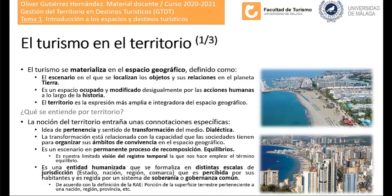El territorio es una entidad humanizada que se formaliza en distintas escalas. Llamamos escalas de jurisdicción a aquellas que gestionan la organización del territorio: el estado, la nación. Hay que diferenciar la nación política y la nación étnica. Muchos estados que se constituyen como naciones políticas incluyen en su interior un conjunto de naciones étnicas, y hay naciones étnicas que pretenden instituirse en naciones políticas. Todo esto tiene implicaciones de equilibrio y dialéctica.